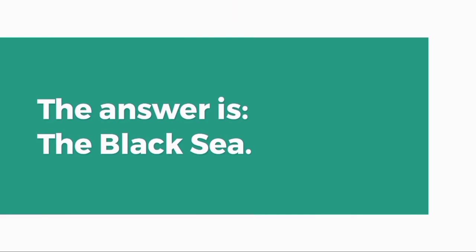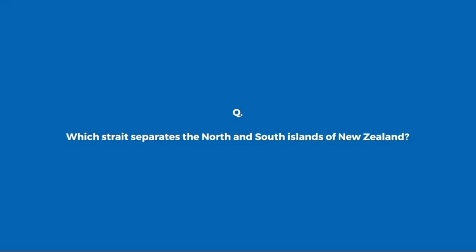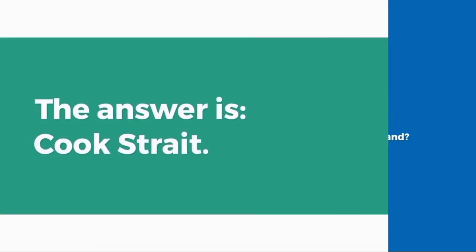The river Danube flows into which sea? The Black Sea. Which strait separates the north and south islands of New Zealand? Cook Strait.